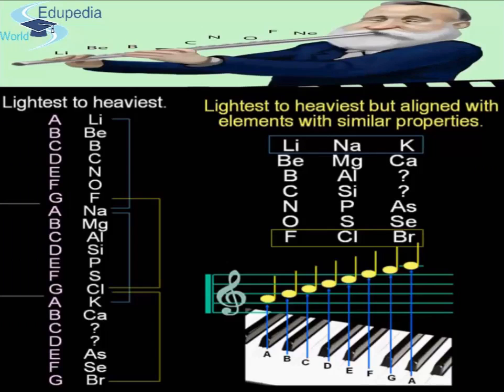Here, you can see that according to the octave law, he arranged the lighter to the heavier elements just as the notes of music. This repetition in the properties is just like the repetition of the eighth note in an octave of music. So it is known as the Law of Octave.